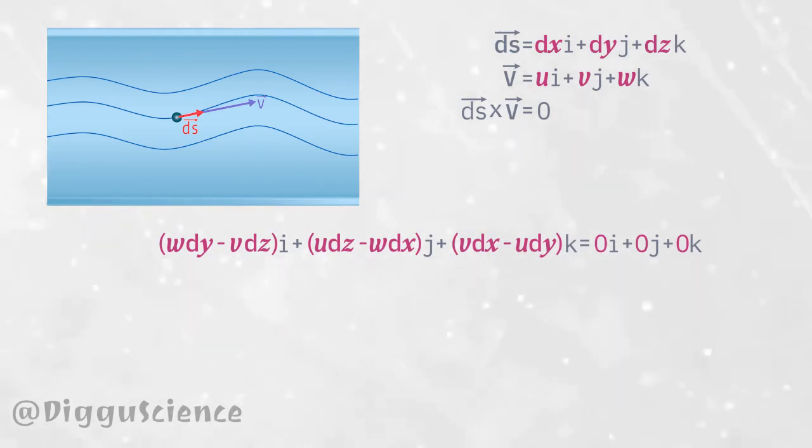Because the value on the left side is the same as the value on the right side, then the value of each component on the left side is the same as the value of each component on the right side. For i component: w dy minus v dz equals zero, or dy over v equals dz over w.